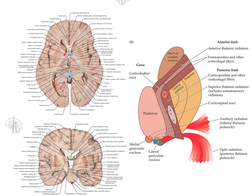The early anatomists when they saw this thought of it as looking a bit like the lower limb. So they gave the internal capsule an anterior limb, a posterior limb, and they called the bend the genu — genu means knee. So they called the bend the genu.